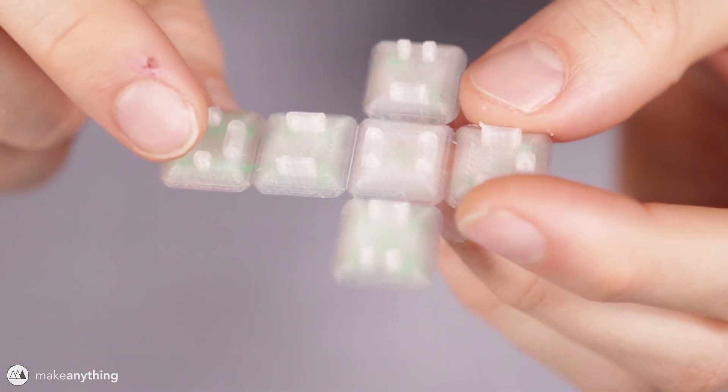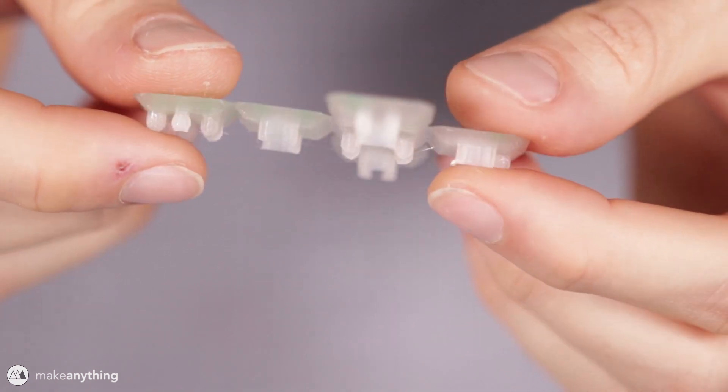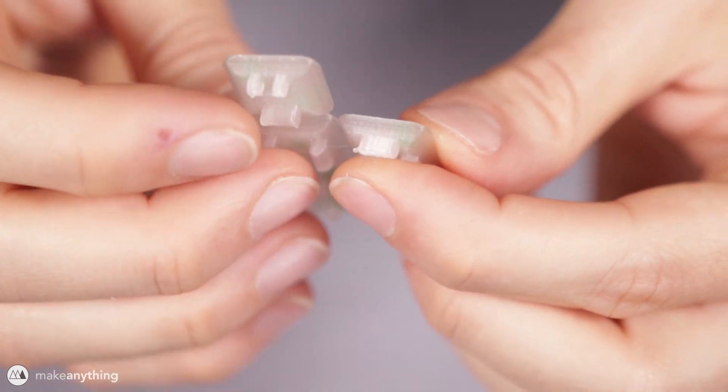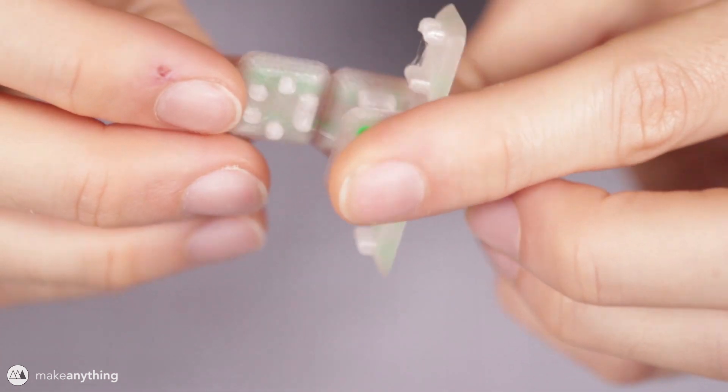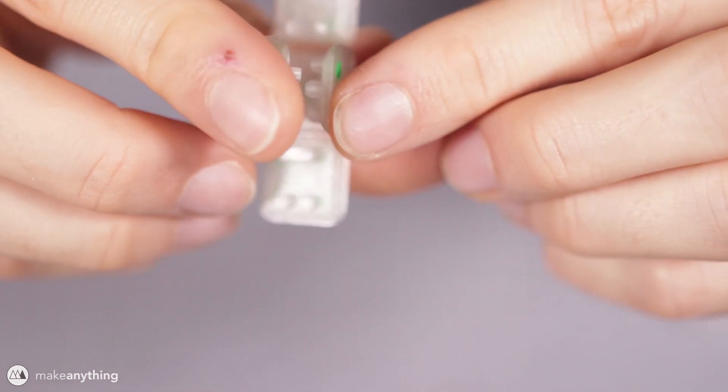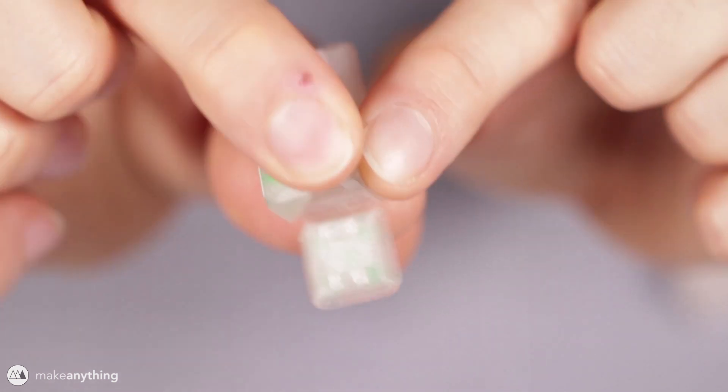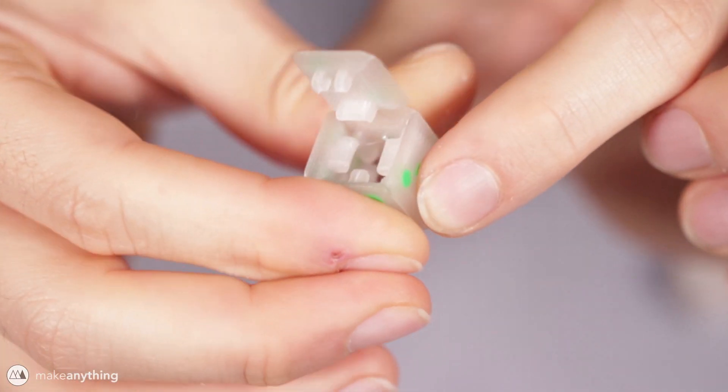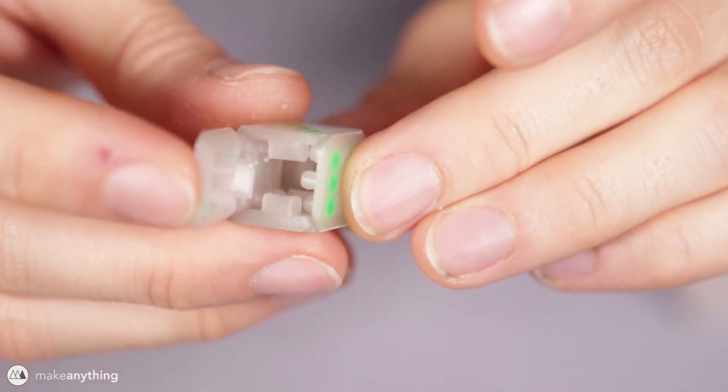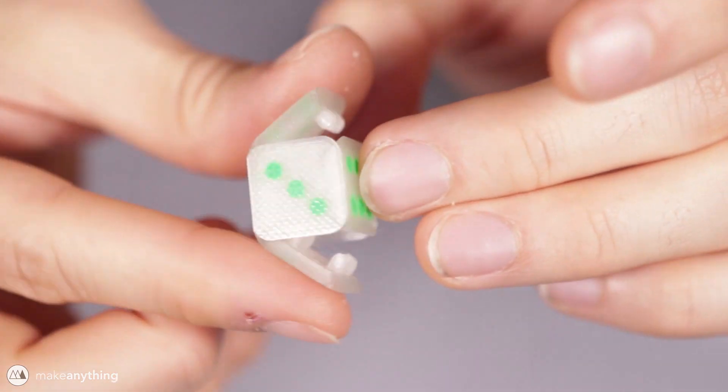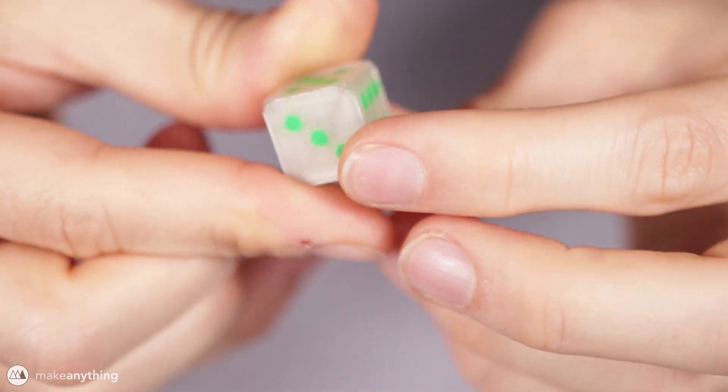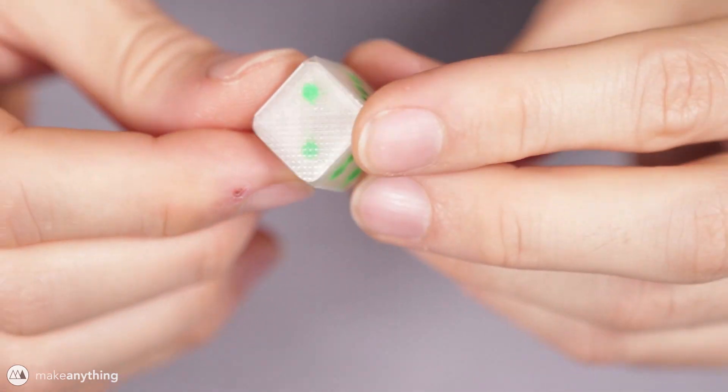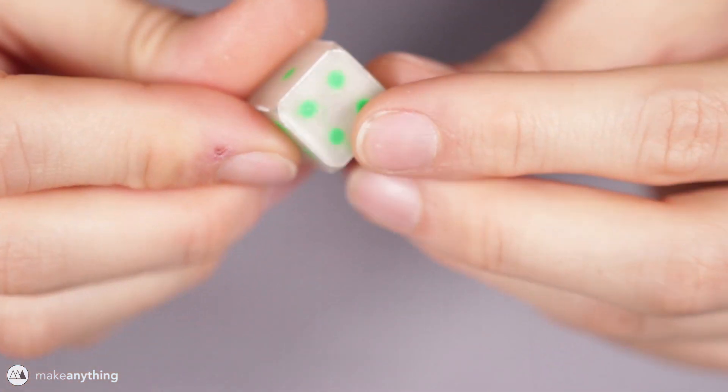As you can see on this side we've got all these little tabs and these are what allow us to snap everything into place. So I'm just gonna carefully start bending the faces. First I'm gonna start with this loop and then I'll just snap that into place and then we've got the two sides we can kind of press together like this and after some satisfying snaps everything is assembled into a nice perfect die.